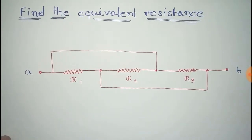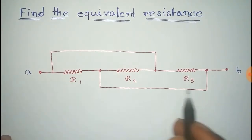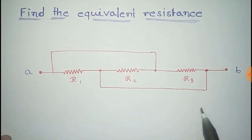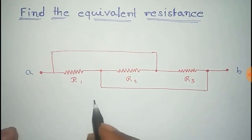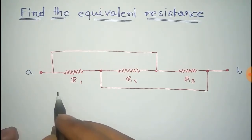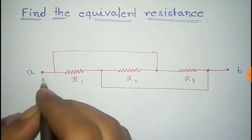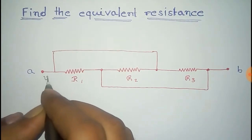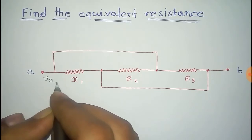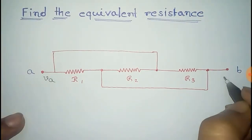In this video we will find the equivalent resistance across points A and B. To find the equivalent resistance, first consider that the potential at terminal A is VA, and the potential at terminal B is VB.